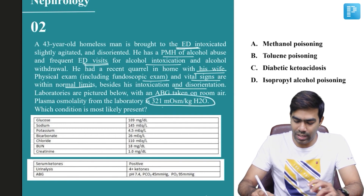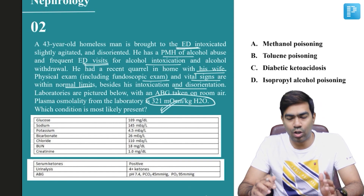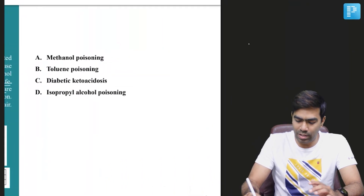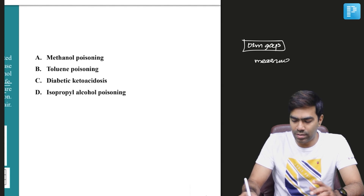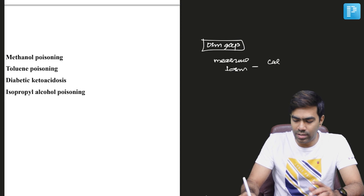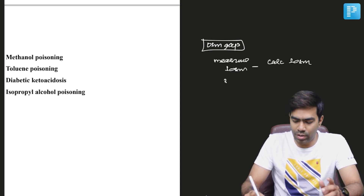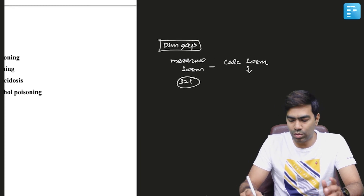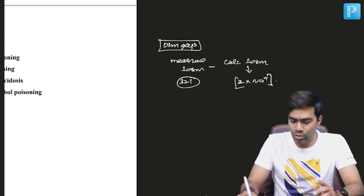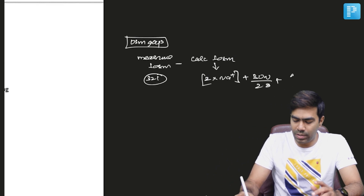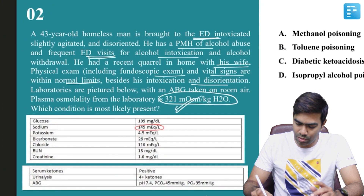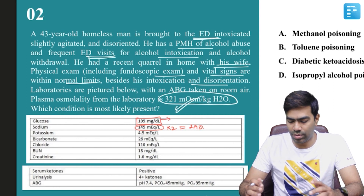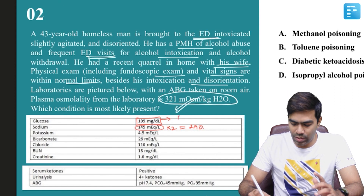Whenever they give osmolality in an intoxicated individual, always find out the osmolal gap — that's extremely important. The osmolal gap is the measured serum osmolality minus the calculated serum osmolality. The measured serum osmolality is already given: it is 321. The formula for calculating serum osmolality is 2 times the sodium, plus BUN divided by 2.8, plus glucose divided by 18. The sodium here is 145, so multiplied by 2 you get around 290. The glucose is 109, so 109 divided by 18 gives around 6.